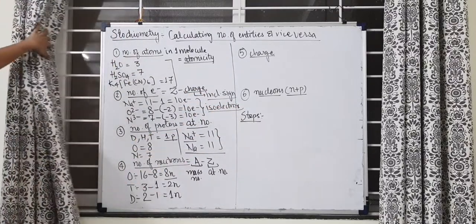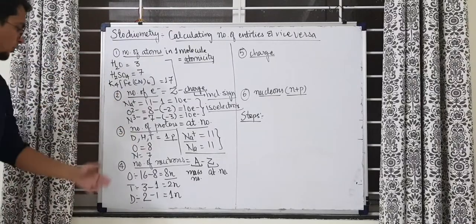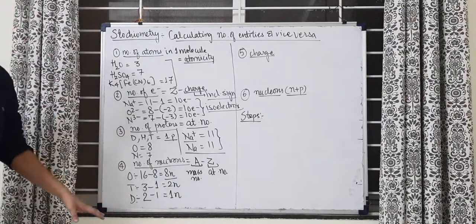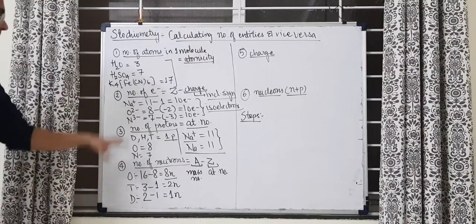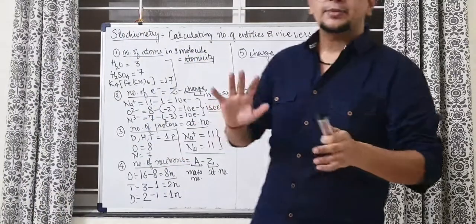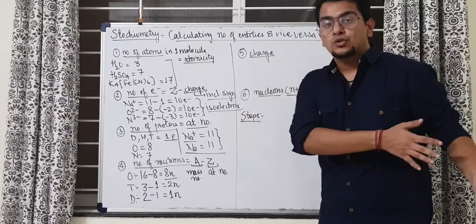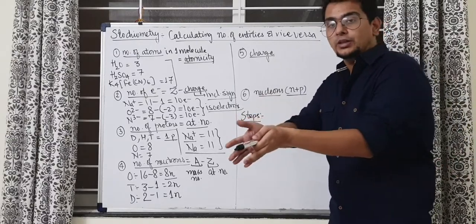But anyway, that's how you can find the number of atoms in molecule, number of electrons, protons, neutrons. Make sure to make the note of it. It's very very important thing. You have to be expert in this. Then only mole concept will help you. As I said in the previous video also, sometimes stoichiometry can be weak. But it is mostly weak because of the previous topics, not the stoichiometry topic actually.